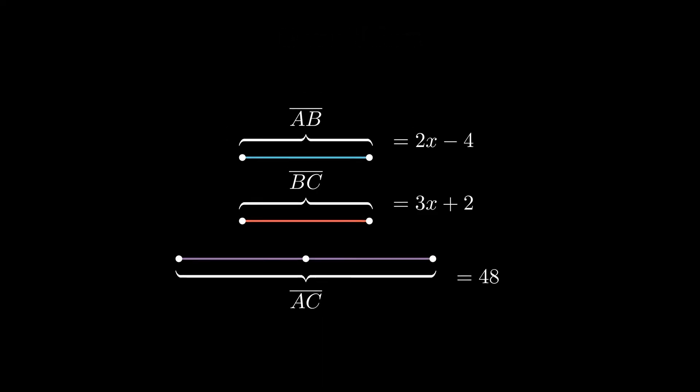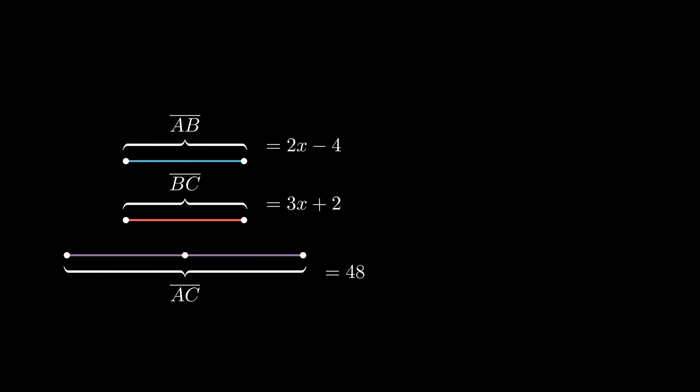Since the points are collinear, which is a fancy term for points lying on the same straight line, we can use the Segment Addition Postulate AB plus BC equals AC to find the value of x. If we plug in our values, we should get the equation 2x minus 4 plus 3x plus 2 equals 48.